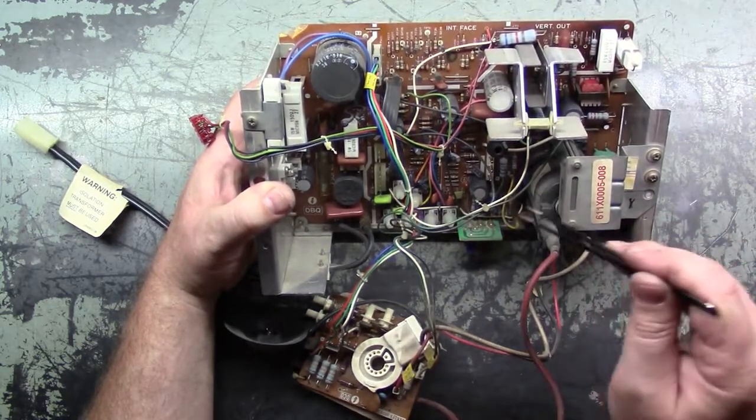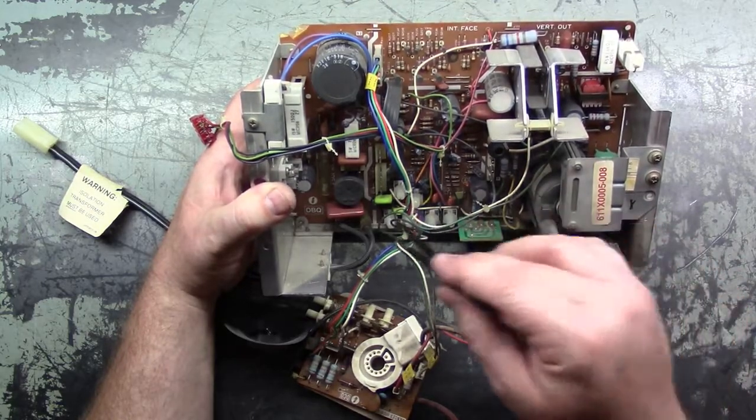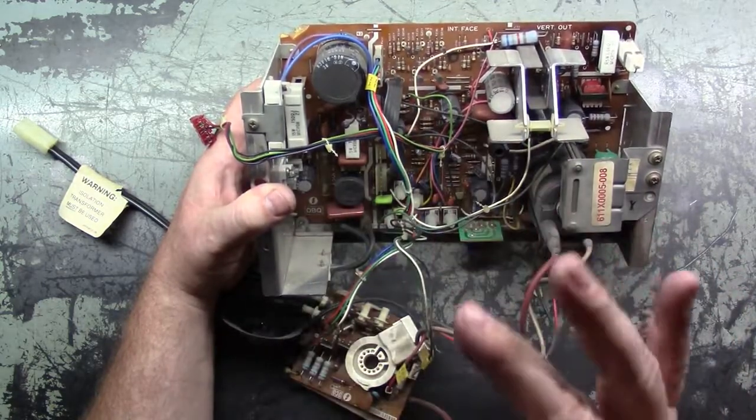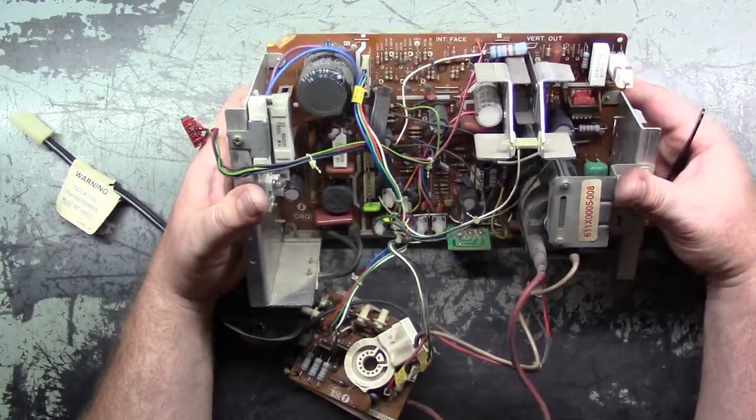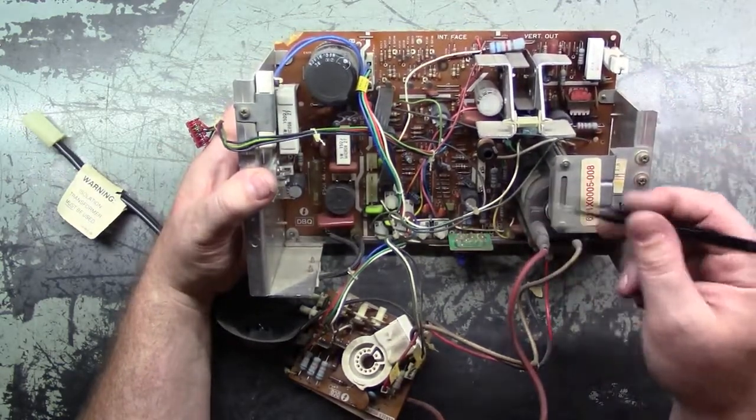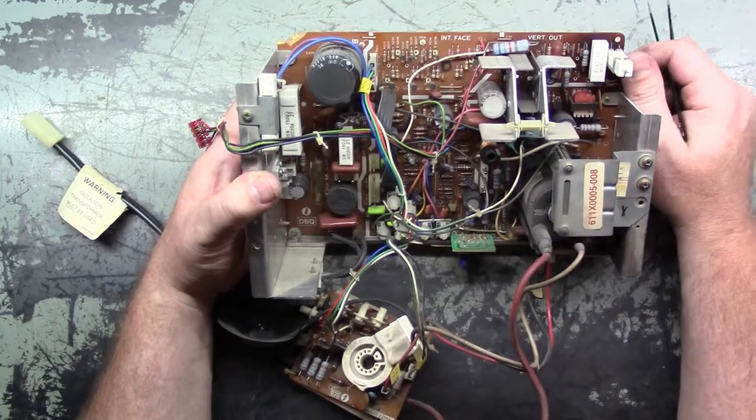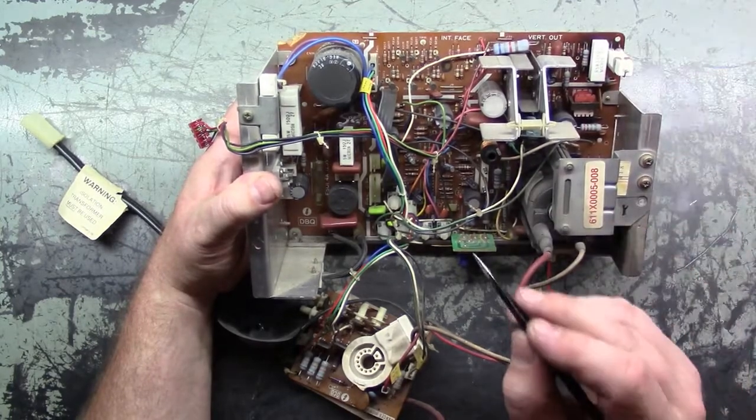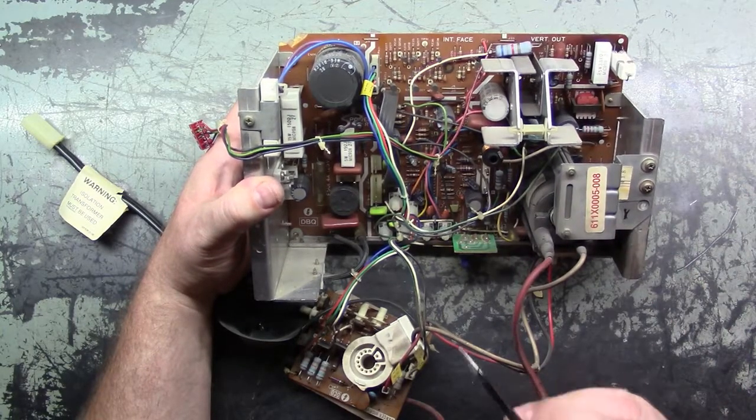There's no bulging caps, or blown flyback, or scorch marks, or burns, fuses intact. Everything is visually okay. So it's kind of a head scratcher when you deal with this, because you think, okay, is it caps, or flyback, or cold solder joint? And it turns out that it actually is a cold solder joint. So let me show you exactly what's going on with these.